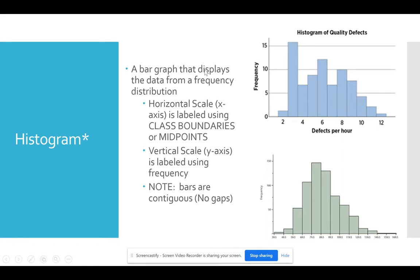It displays the data from the frequency distribution, from the table, once you've organized your data into a table. The horizontal scale is labeled either using class boundaries or using class midpoints. So it depends on what technology you're using. It may also depend upon the researcher. In this particular example, the graph at the top for quality defects has the class midpoint. And the graph at the bottom is using your class boundaries.